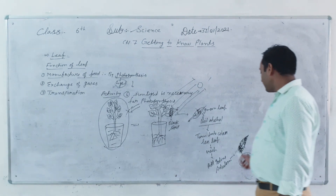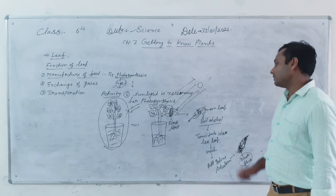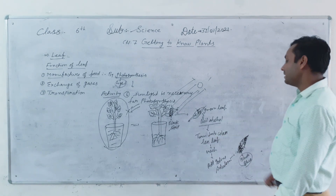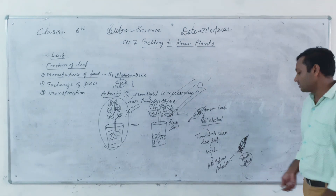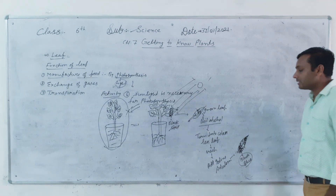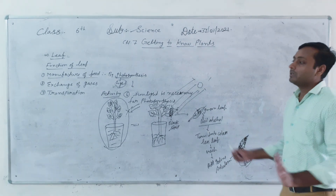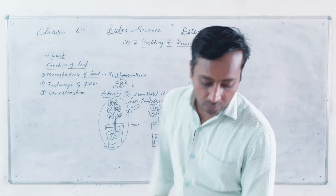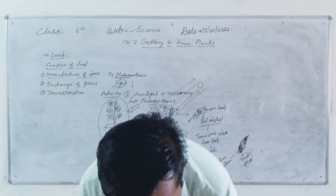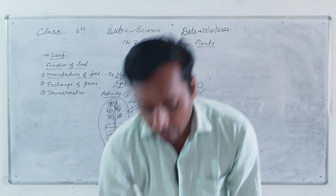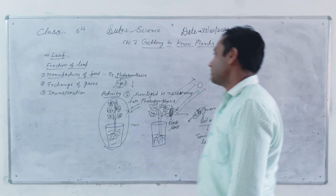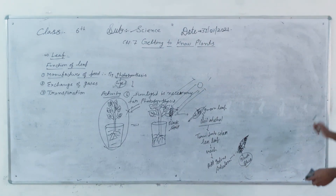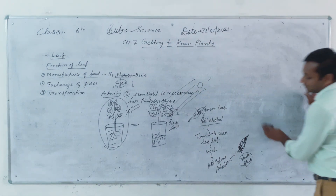The covered part turns black with iodine, and this activity has proved that sunlight is necessary for photosynthesis.